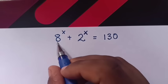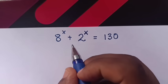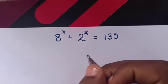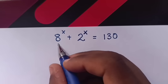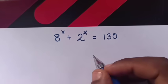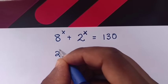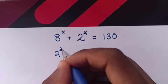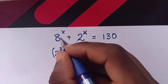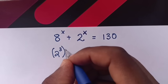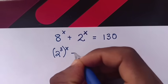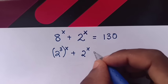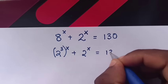Hello. How to solve 8 power x plus 2 power x is equals to 130. To find the value of x, 8 is same as 2 power 3. Then we multiply by the power of x here, plus 2 power x is equals to 130.